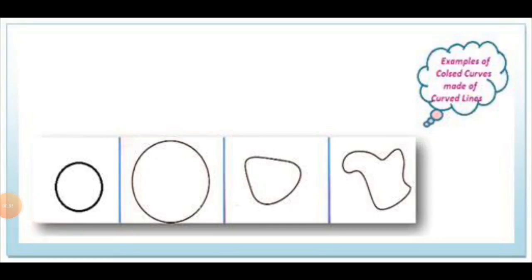These are some examples of shapes made up of curved lines. A circle and semi-circle have curved lines.